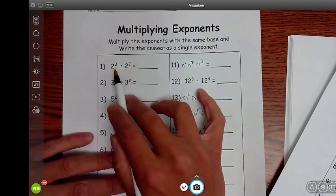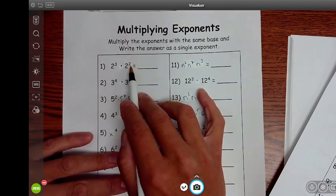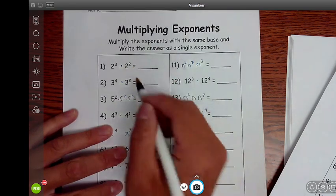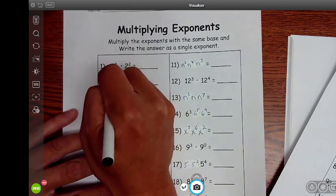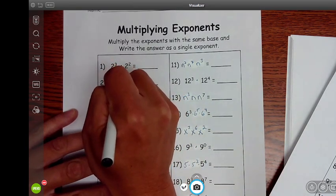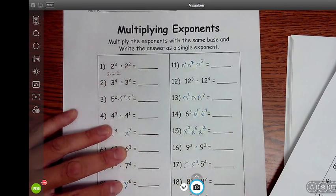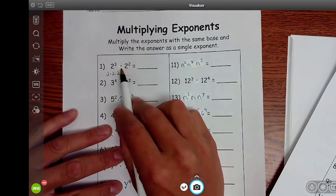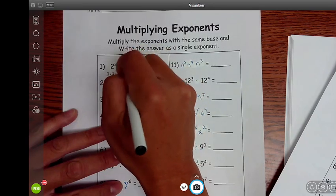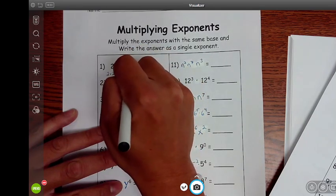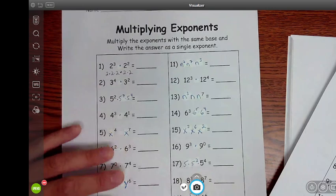So I have 2 to the 3rd times 2 to the 2nd. So what does 2 to the 3rd mean? 2 to the 3rd means 2 times 2 times 2. Then I have 2 times, that's being multiplied by 2 to the 2nd, so I'm going to bring down that times, and then 2 to the 2nd looks like this.